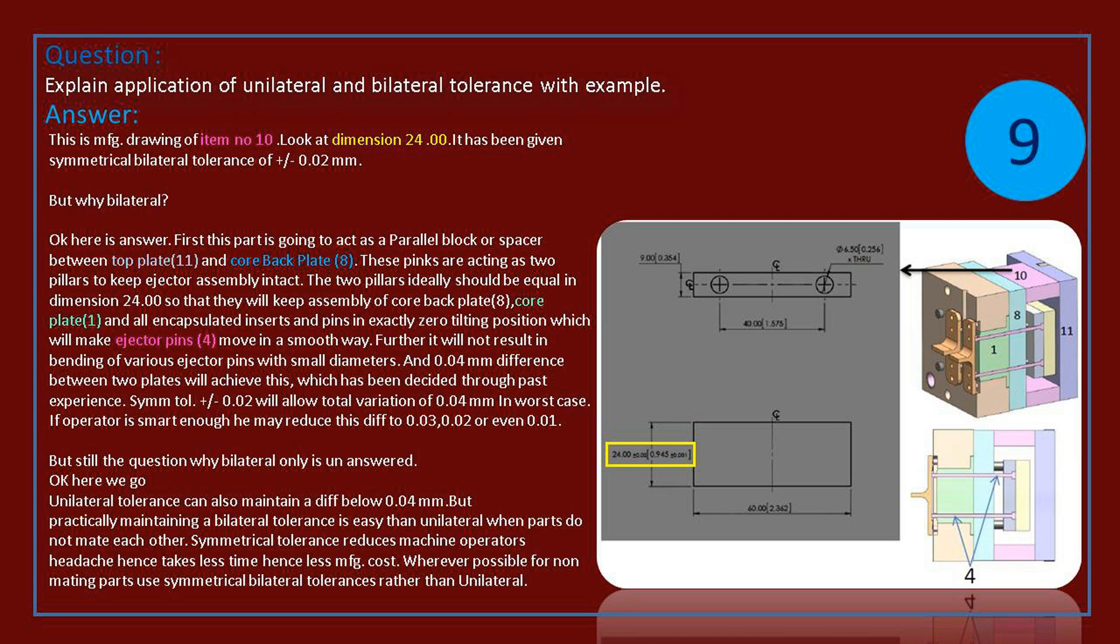so that they will keep assembly of core back plate, core plate, and all encapsulated inserts and pins in exactly zero tilting position, which will make ejector pins move in a smooth way. Further, it will not result in bending of various ejector pins with small diameters, and 0.04 mm difference between two plates will achieve this,